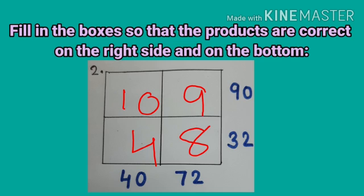10 9s are 90. Right side 4 8s are 32 and if you see bottom 9 8s are 72 and 10 4s are 40. In this way you have to solve the puzzles.